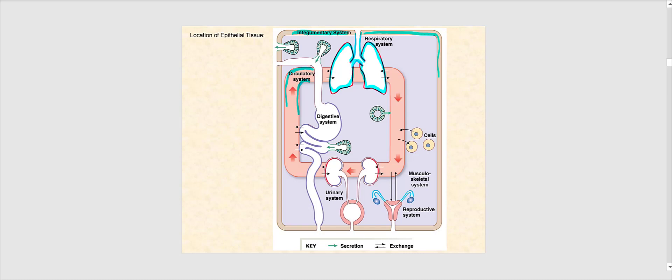Our digestive system is also lined with epithelial tissue. Our entire digestive tract — including our stomach and intestines, all the way down to the anal canal — is lined with epithelial tissue facing the lumen. Similarly, the urinary system, including the kidneys, urinary tract, and urinary bladder, is all lined with epithelial tissue facing the lumen and external surfaces.